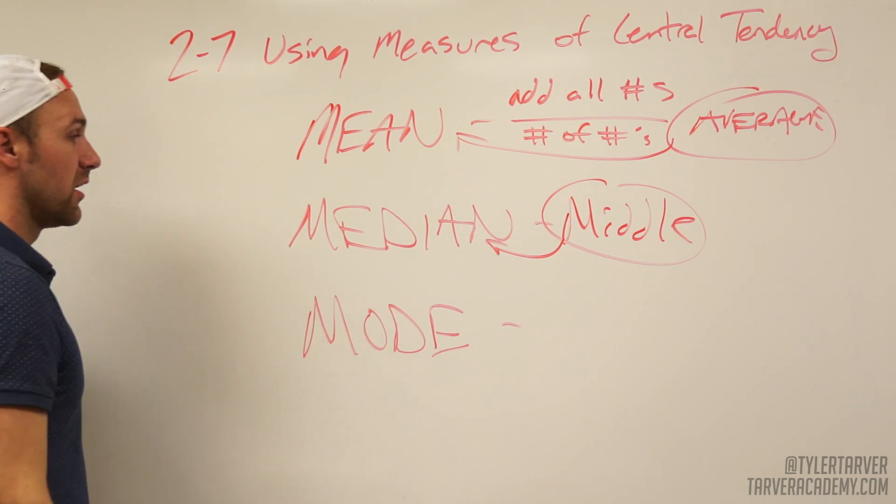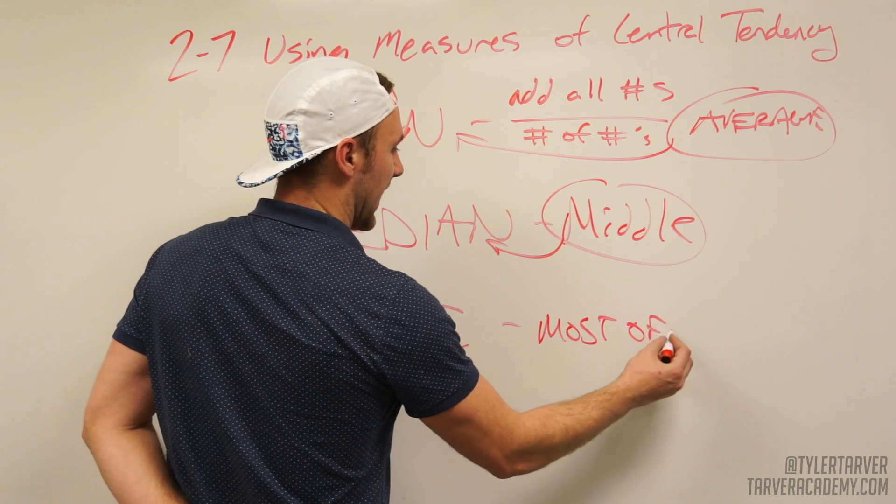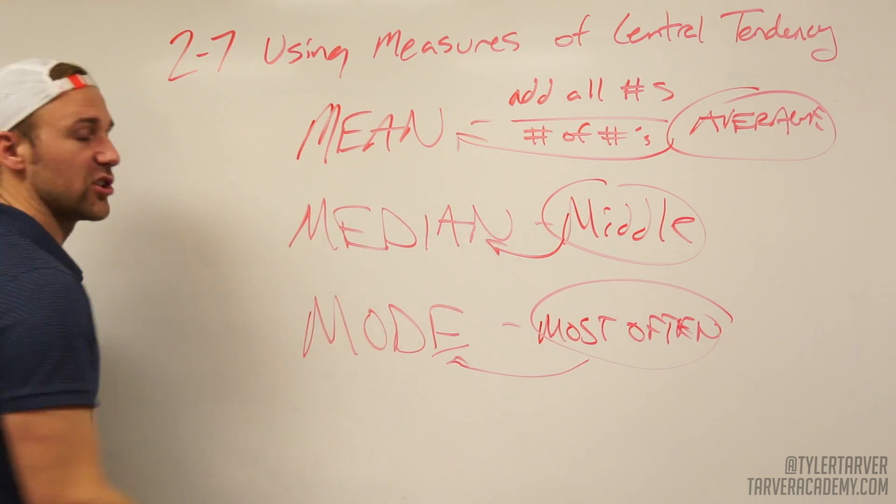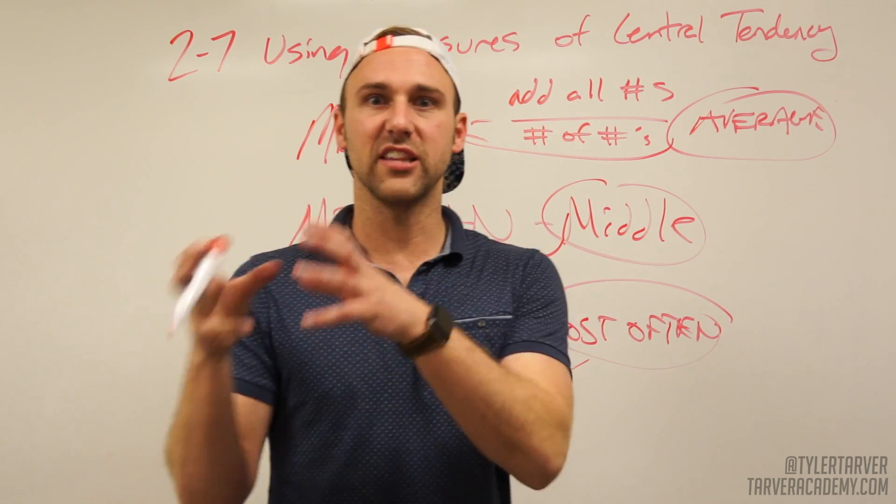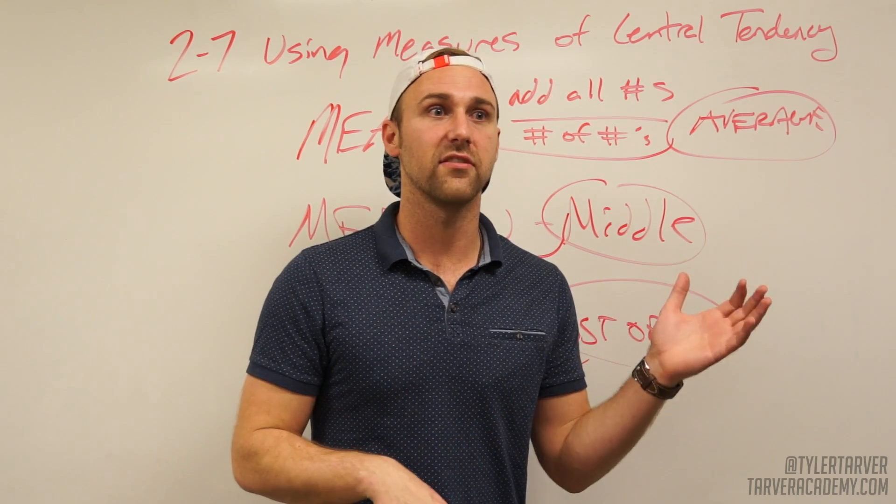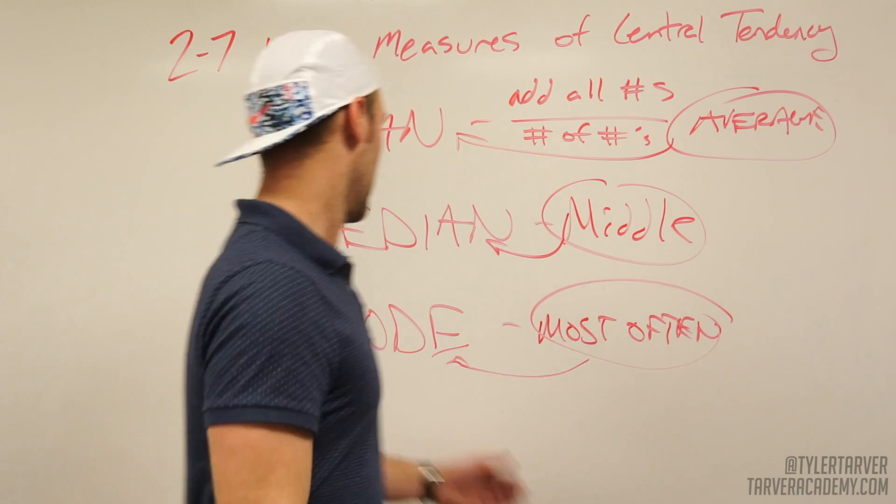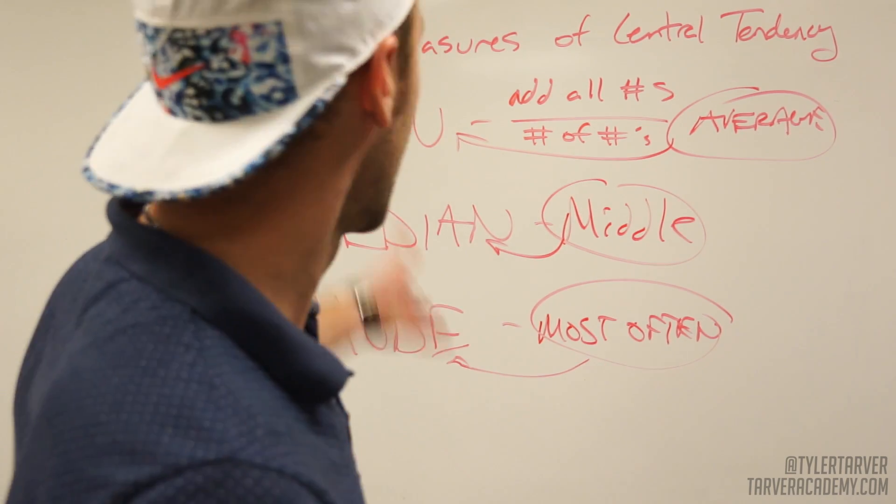Mode - that's the most often. I wish I could have gotten that in one word. That's whatever occurs most often. So if you got a set of numbers, it's whatever you see the most of. Like if you got seven, seven, two, seven, five, four, three - there are three sevens in there, so your mode would be seven because you see it the most. Those are your measures of central tendency.